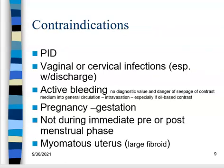Contraindications: pelvic inflammatory disease, typically secondary to an STD — inflammation and infection of the uterus or vagina. Vaginal or cervical infections, especially with discharge. Active bleeding will mess up our HSG. Pregnancy is a contraindication because it would likely cause abortion of the fetus. The immediately pre- or post-menstrual phase won't be conclusive. And a myomatous uterus containing a large fibroid leaves no space for contrast to go, so the study probably wouldn't work.